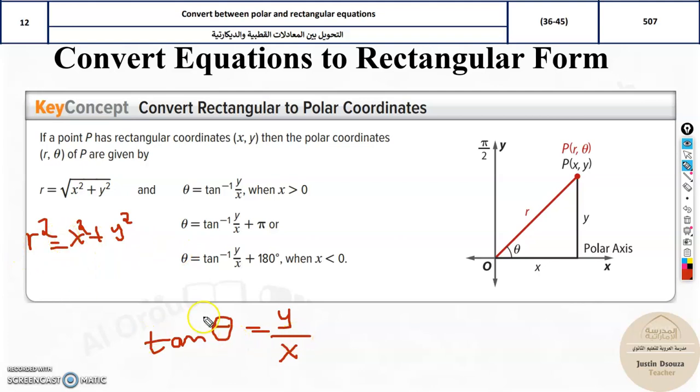These are the formulas. Now if you have cot, then it's 1 by tan, so 1 by tan theta, that would be x by y. Or if you have secant, it's 1 by cos, and then you can easily try and solve it.